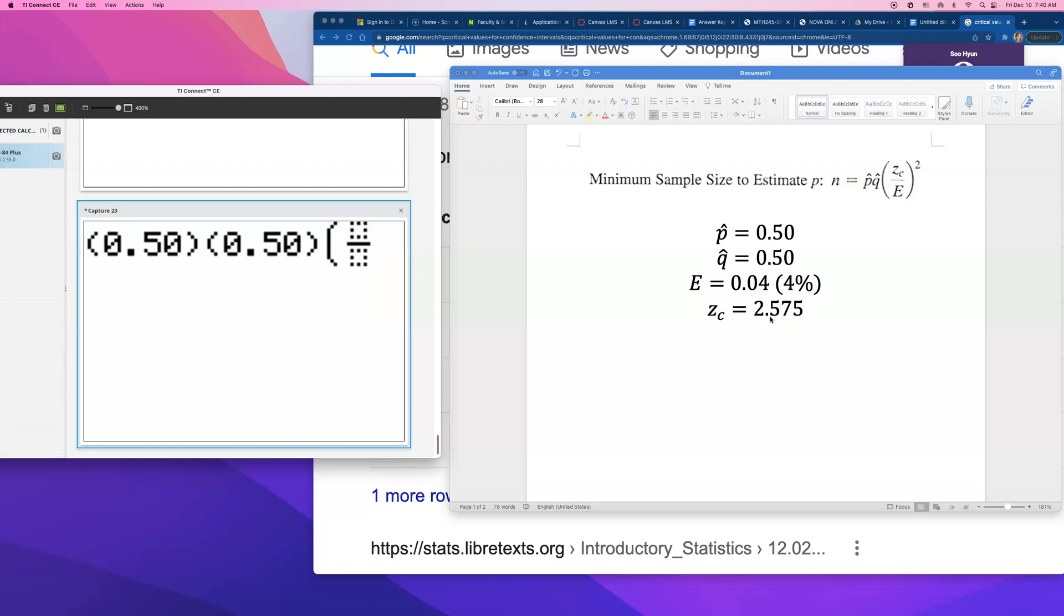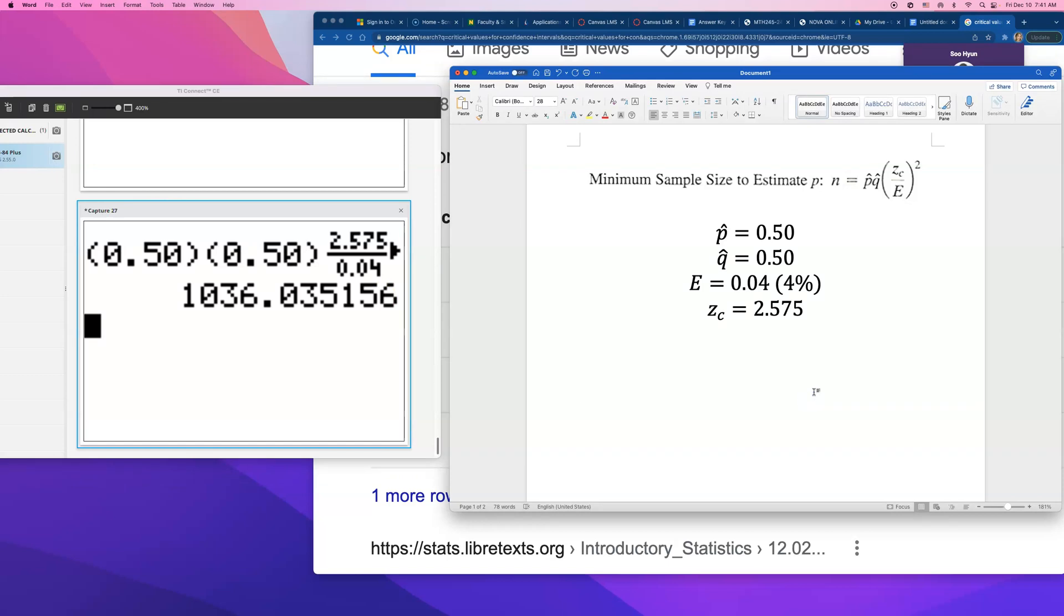On top of this fraction, let me put that critical value 2.575. I'm going to go to the bottom of the fraction and type in the desired margin of error, 0.04. And then I will close the parenthesis and raise that to the second power and square that. So, look, I typed everything in, and I'm going to hit enter, and it came out to be that number. You always have to round up. So, when you round this up, minimum sample size required is 1037.